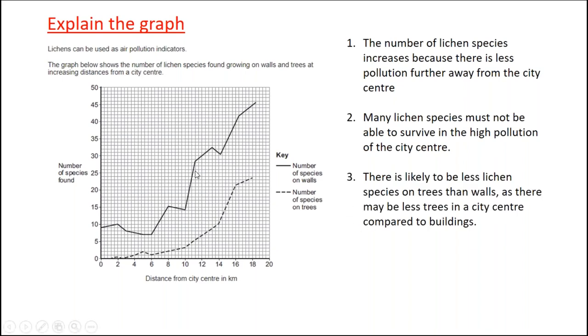I've also attempted an explanation as to why there's less on the trees. And the reason I've gone for is, well, if you're in a city center, how many trees are there? There's hardly any, isn't there? So the chances are before we just got more buildings, then we do trees and therefore more lichen species on those buildings. So explain, give the reasons why, use science that you've hopefully learned.